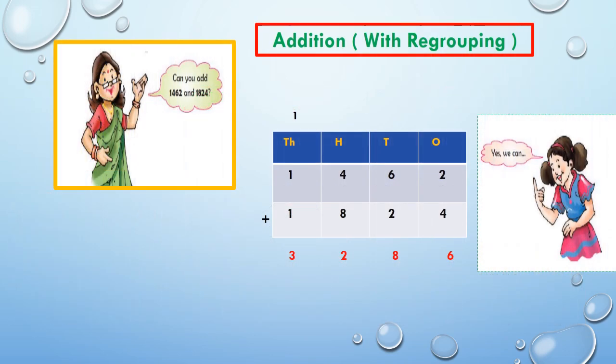Our next topic is Addition with regrouping. Can you add 1,462 and 1,824? Yes, we can. First, we add ones and tens. In ones column, 2 plus 4 which is equal to 6. And in tens column, 6 plus 2 which is equal to 8.